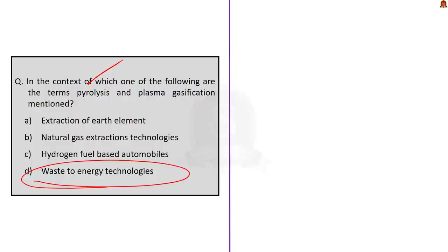Through pyrolysis, we get useful products like charcoal, tar, methyl alcohol, acetic acid, acetone, and fuel gas. So from waste, we are generating products which can produce energy. Therefore, the correct option is Option D: waste to energy technologies. What can we infer from this question? Conceptual understanding of a topic is very important. Rote learning will not help in UPSC — analytical understanding does. Make sure you study standard materials twice or thrice before the exam so that when the easiest questions come, you can score maximum marks.